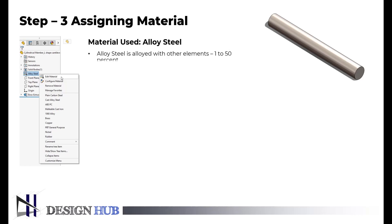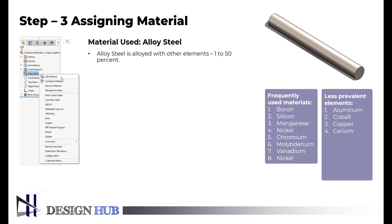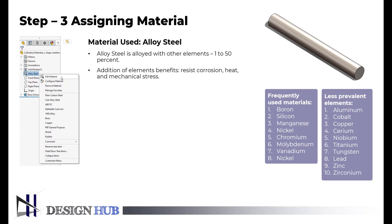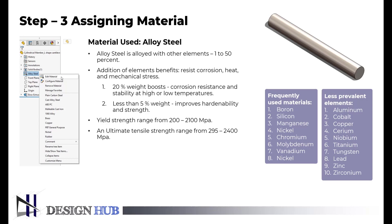Let's see about alloy steel. A type of steel known as alloy steel is alloyed with other elements, ranging from 1 to 50 weight percent, in addition to carbon, to improve the material's numerous qualities. These elements frequently contain boron, silicon, manganese, nickel, etc. Less prevalent elements include aluminium, cobalt, copper, and cerium. Smaller additions of less than 5 weight percent tend to improve mechanical qualities such as hardenability and strength, while higher additions of up to 20 weight percent boost corrosion resistance and stability at high or low temperatures. This material has a yield strength range from 200 to 2,100 MPa, and an ultimate tensile strength range from 295 to 2,400 MPa. These two properties, accompanied by Brinell hardness, vary widely with composition and heat treatment.